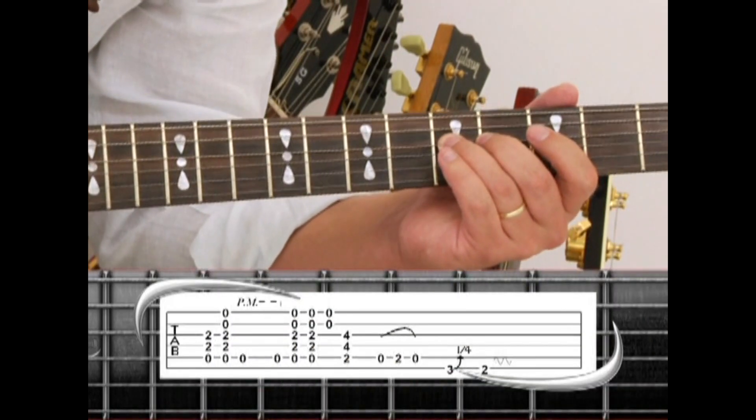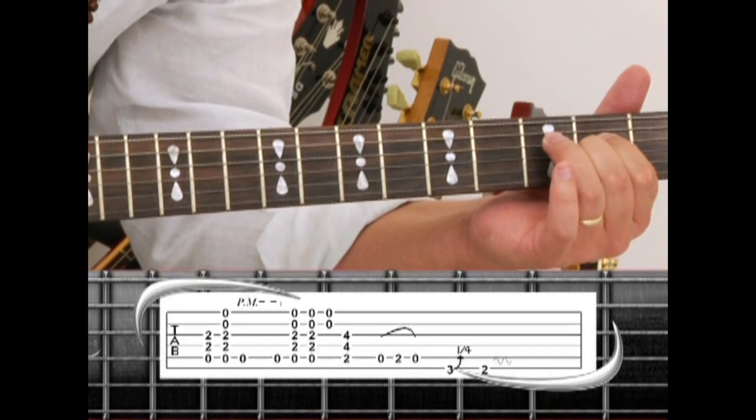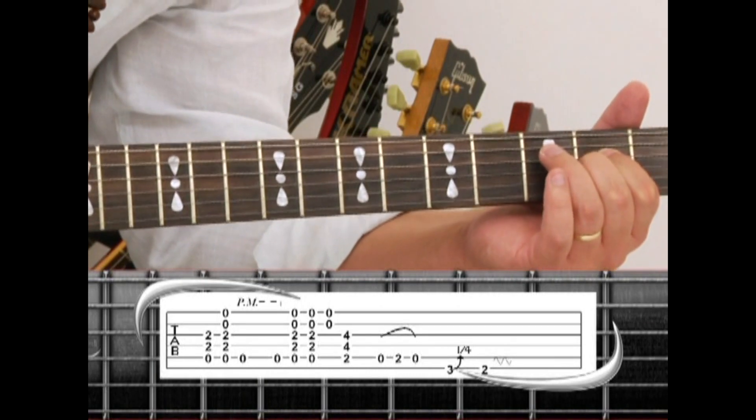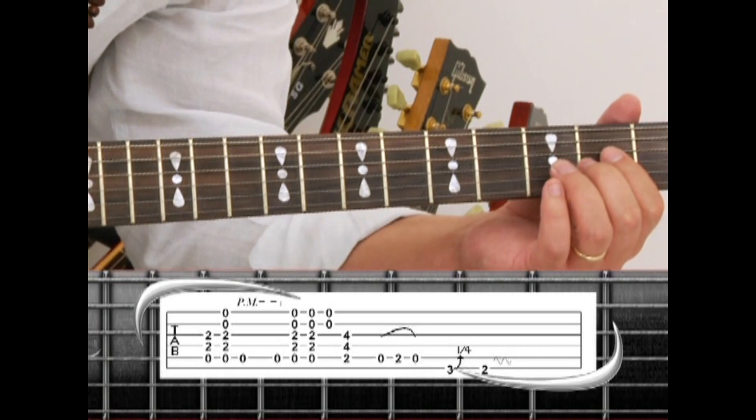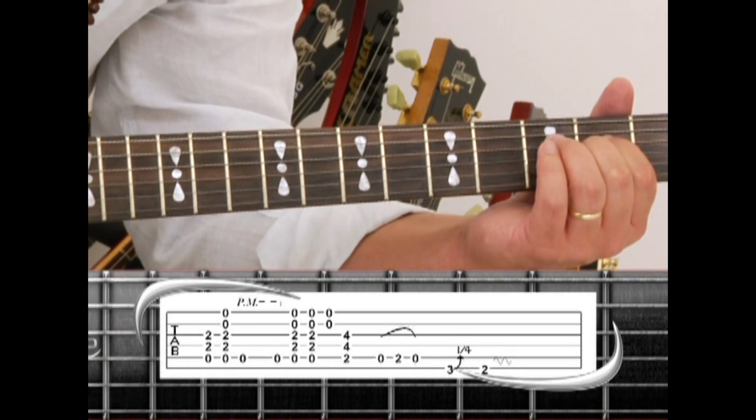Switch to A5. A5 drone. 2 A bass notes. Strum A5 drone twice. Then just the 1st and 2nd strings.